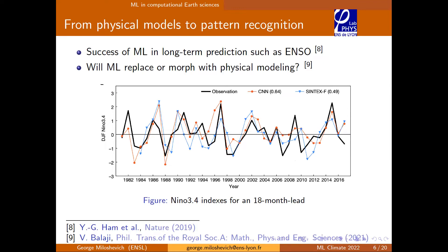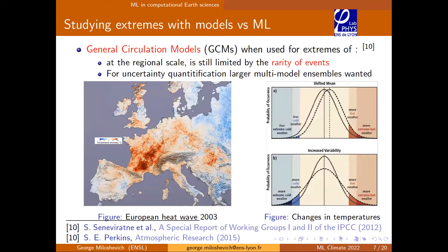Machine learning has shown its success in prediction of events such as El Niño Southern Oscillation in the long term. Here you see the index of El Niño as a function of years — black is observation, this is a convolutional neural network prediction, and this is the model. You can see that it's working relatively well. Also, the method of analogues may work well in these situations.